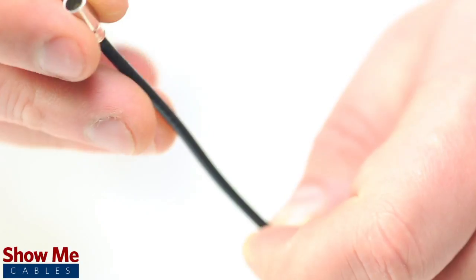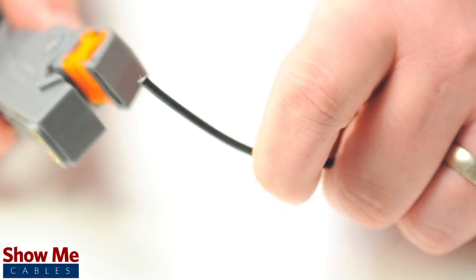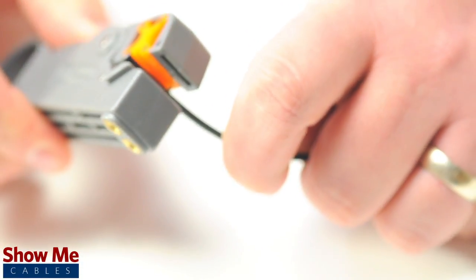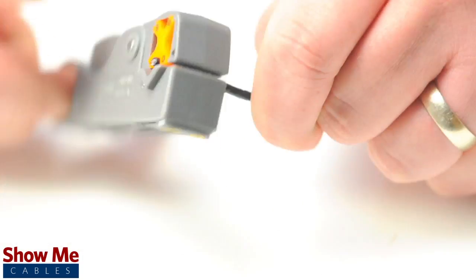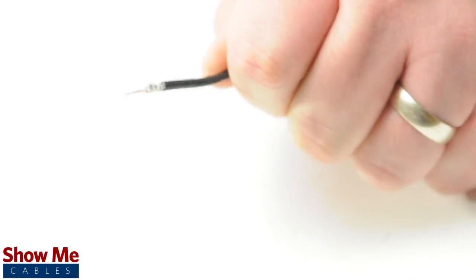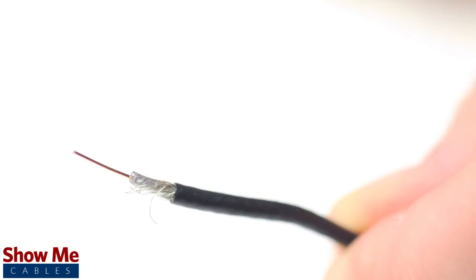Start by inserting the ferrule over the outer jacket of the cable. Then, using your cable stripper, strip back the outer jacket and dielectric. The advantage of using a cable stripper is that it will strip back the jacket and dielectric at the same time.